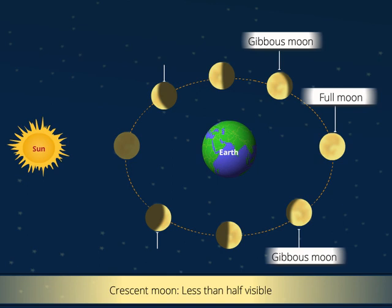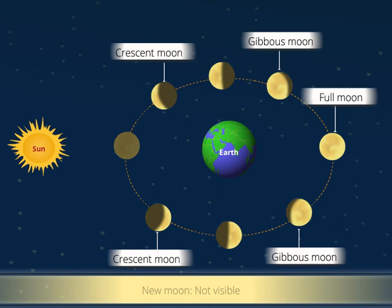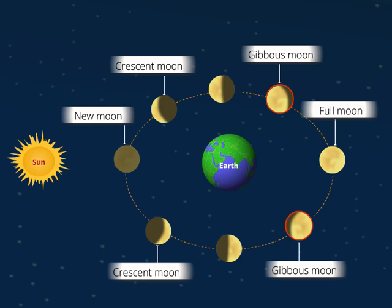And when the dark side of the moon is towards the earth, on such days, we cannot see the moon. It is called the new moon or no moon. Thus, full moon, gibbous moon, crescent moon, and new moon are the four phases of the moon.